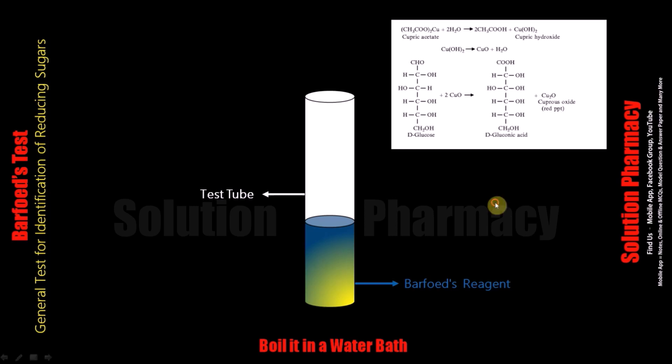After boiling the content of the test tube for 1 to 2 minutes, observe the formation of brick red precipitate. Formation of brick red precipitate indicates the presence of reducing monosaccharides, for example glucose or fructose.